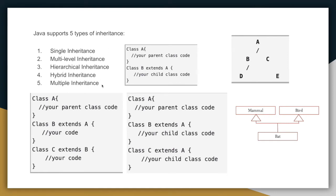Single inheritance: class A is extended to class B. Multi-level inheritance: class A extends to class B, and class C extends class B. Hierarchical inheritance: class B and class C are child classes of class A, and class D is a child of class B or C — this forms a hierarchy. Hybrid inheritance is a combination of multi-level and hierarchical inheritance. Multiple inheritance means having two superclasses for one subclass — this is not possible in Java.